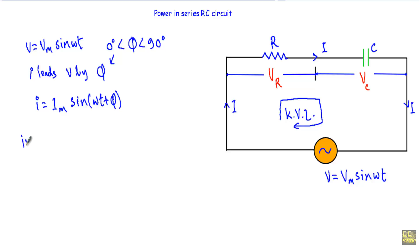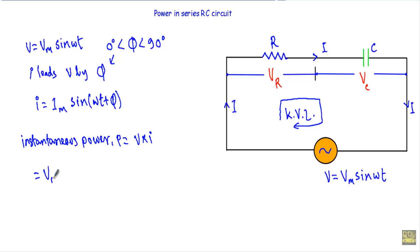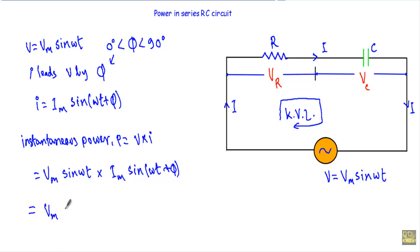Now, the value of instantaneous power is the product of instantaneous voltage V and instantaneous current I. The instantaneous voltage is given by Vm sin(ωt) and the instantaneous current is given by Im sin(ωt + phi). So I can write down the instantaneous power as Vm·Im·sin(ωt)·sin(ωt + phi).